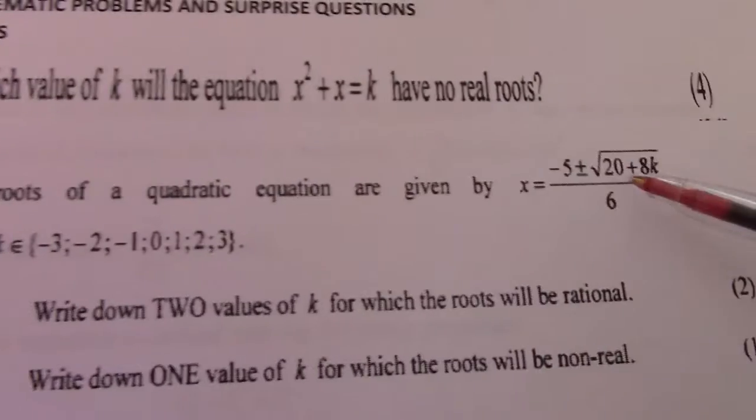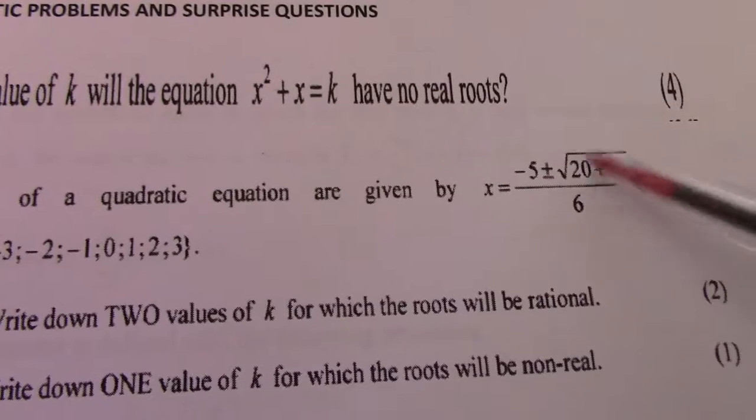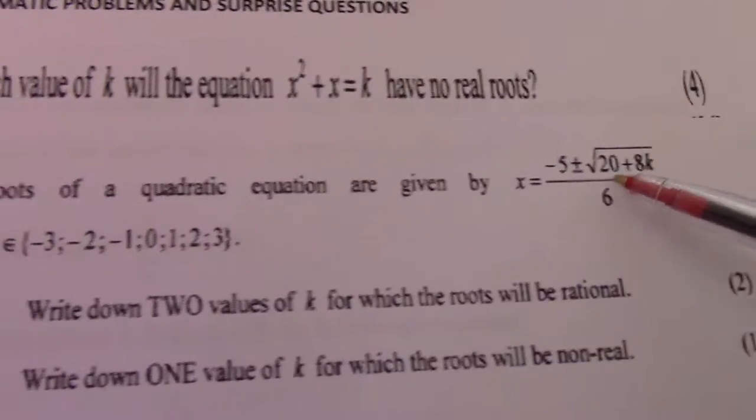So I put in minus 3 there, 8 times negative 3 would give me negative 24 plus 20 square root negative, non-real roots.